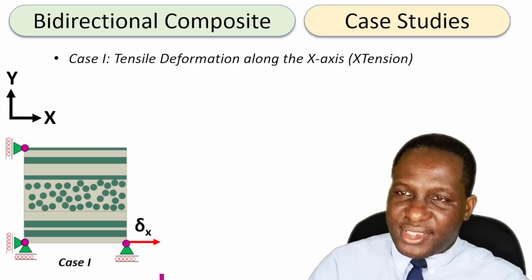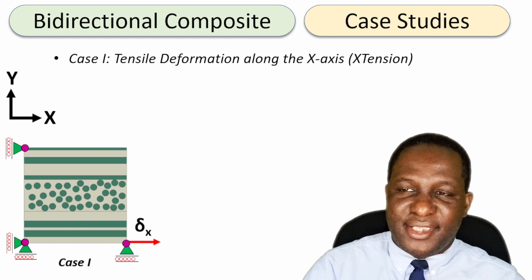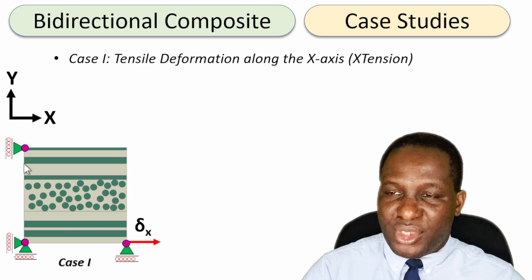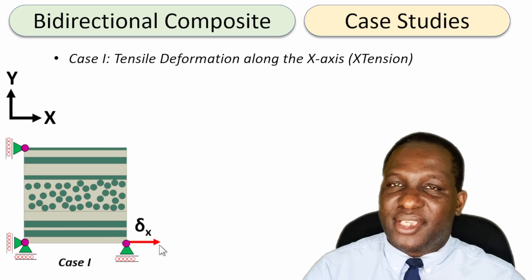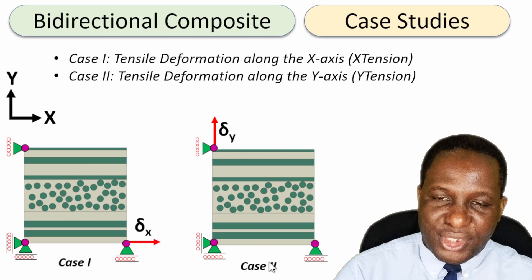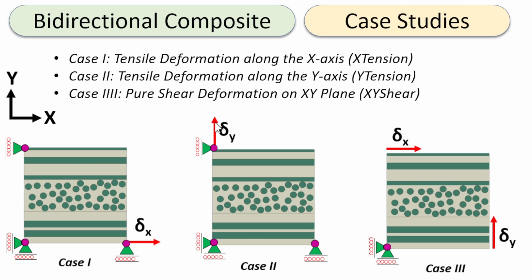The case studies we'll investigate: first is tensile deformation along the x-axis, where three corner nodes are pinned and a displacement is applied along the x-axis. Second is y-axis deformation, where we pin the three corner nodes and displace in the y-axis. The final case is pure shear deformation on the x-y plane, where we pin one corner and apply displacement in the x and y directions at the corner points.